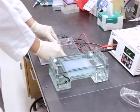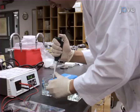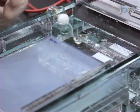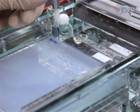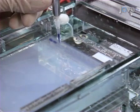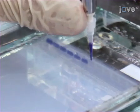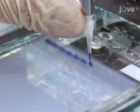Remove the lid of the gel box. Slowly and carefully load the DNA samples into the gel. The loading dye in the sample allows the sample to sink into the gel and will help to track how far the sample has traveled. A DNA size marker should always be loaded along with the experimental samples.